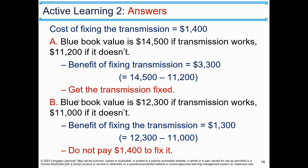Scenario B: blue book value is $12,300 if transmission works, $11,000 if it doesn't. The benefit of fixing the transmission is $1,300 ($12,300 minus $11,000). The cost to fix is $1,400. Since marginal cost exceeds marginal benefit, don't fix it — sell it as is. People make decisions on the margin.